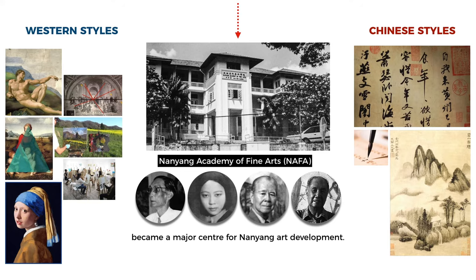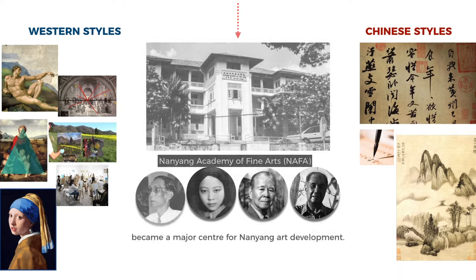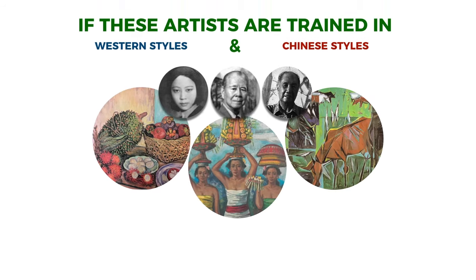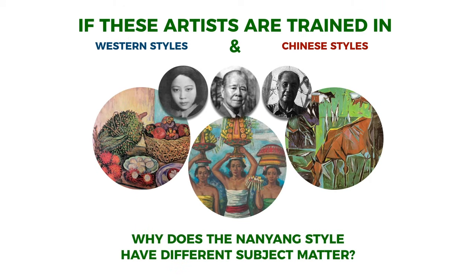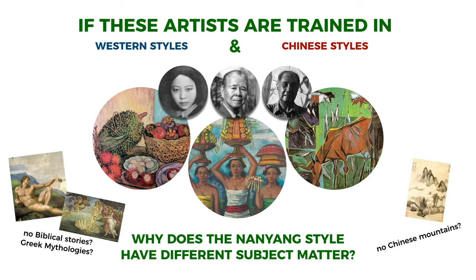So here's the big question: if the Nanyang artists are trained in both Chinese and Western styles, why do we not see common Chinese or Western subject matter? Why no mountains? Why no biblical stories? Why no Greek mythologies?